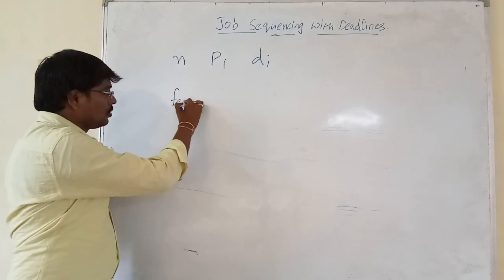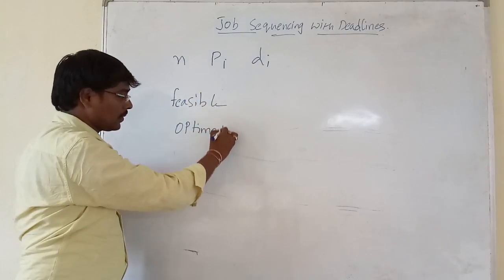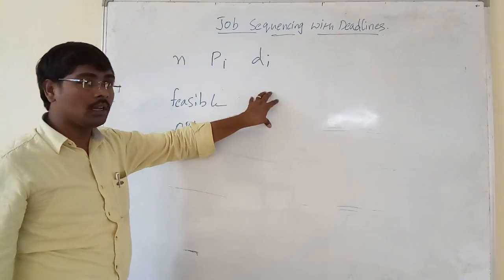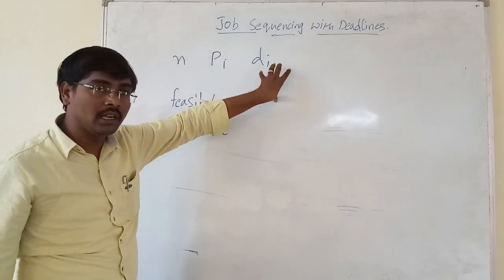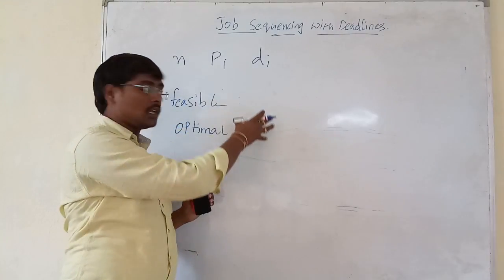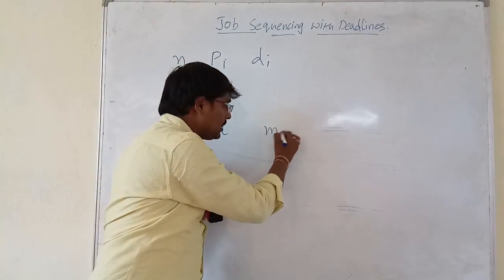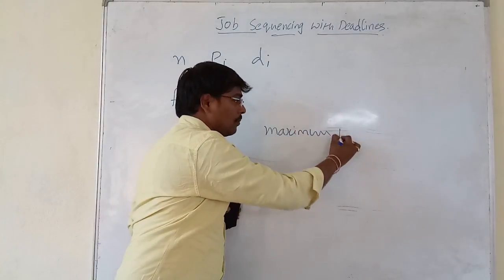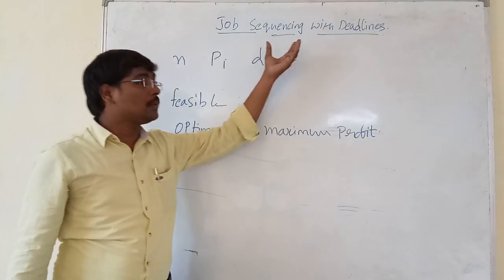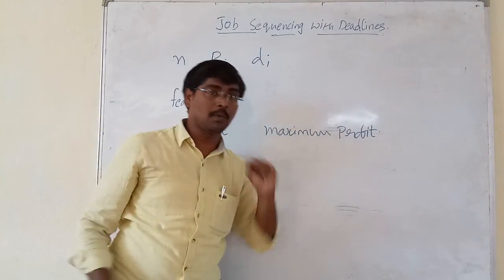We have two types of solutions: one is feasible and the second one is optimal. A feasible solution means the subset of jobs that are executed within their deadline. Among all feasible solutions, the set of jobs that are executed with maximum profit is called the optimal solution. That is, job sequencing with deadline means executing a set of jobs to get maximum profit.